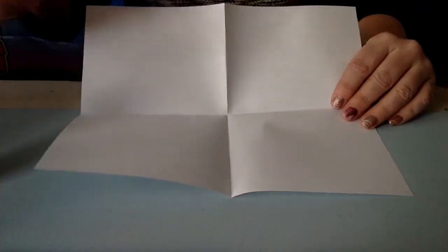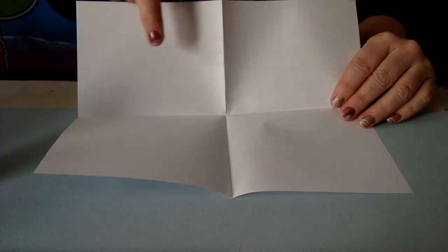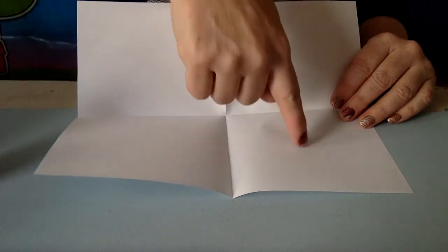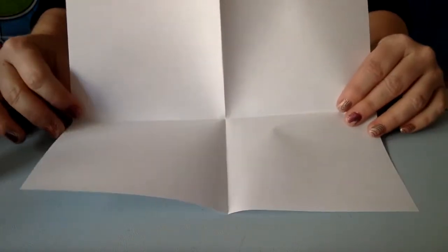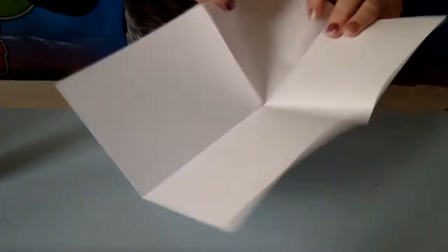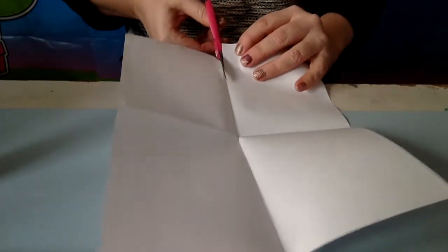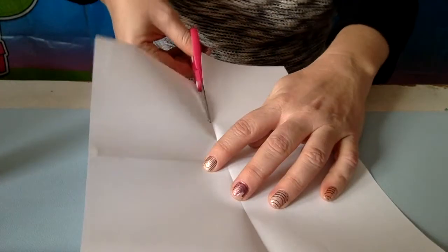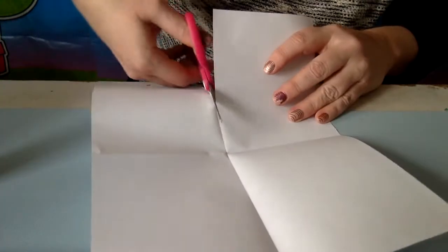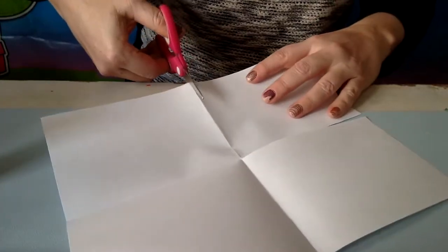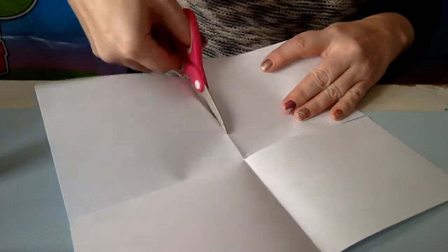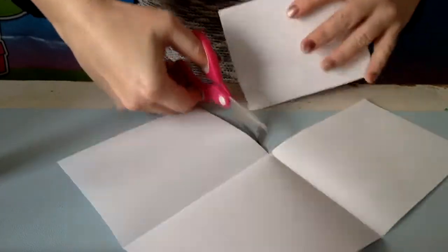When you open your piece of paper, you should see one, two, three, four different rectangles. We only need one of them, so this is where we're going to cut our rectangle on the lines that I just created.